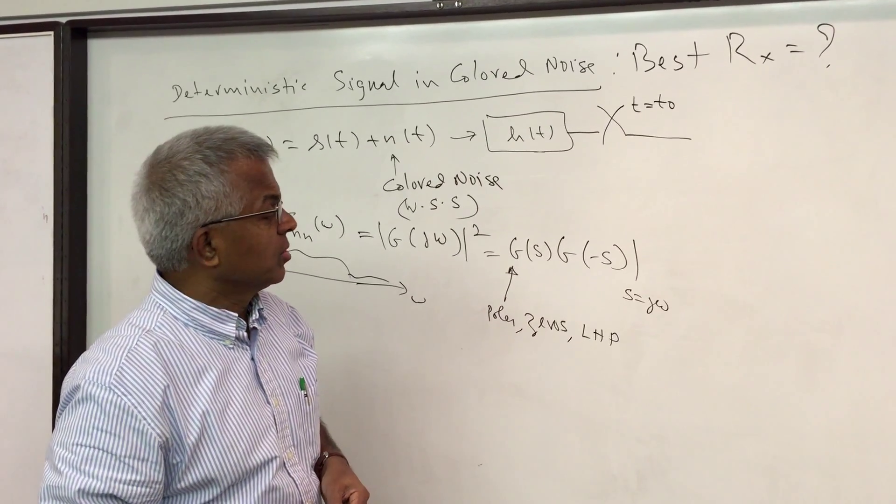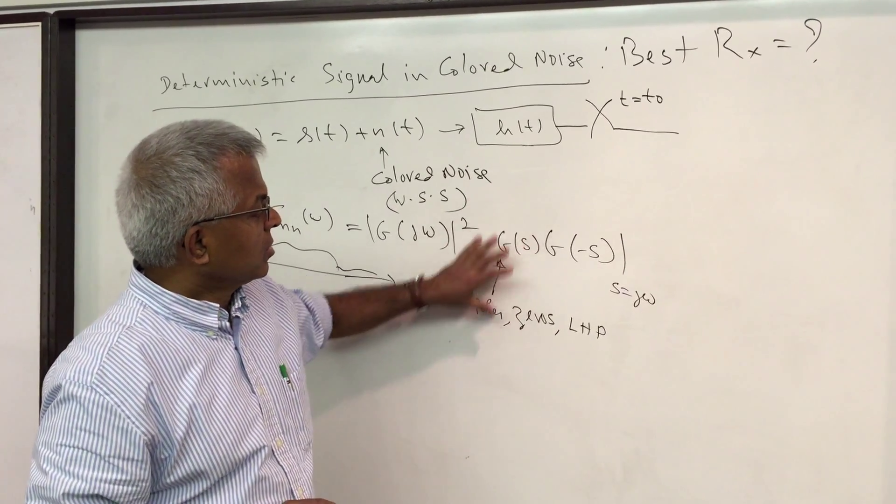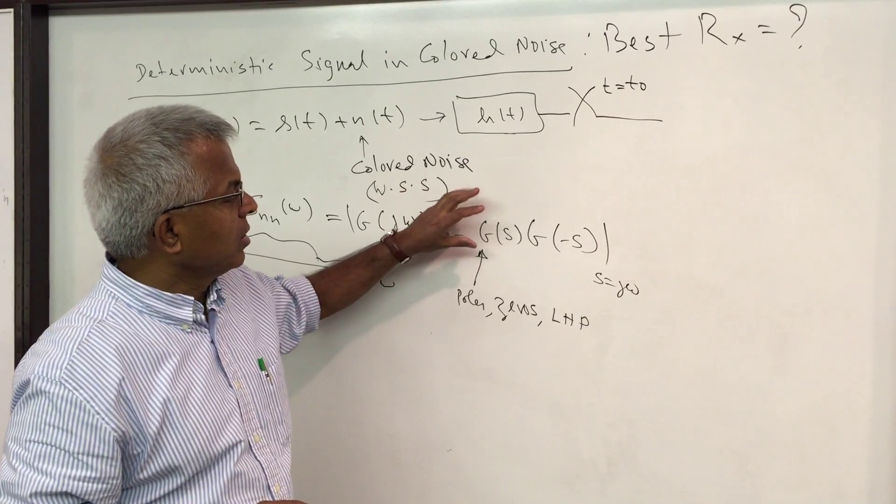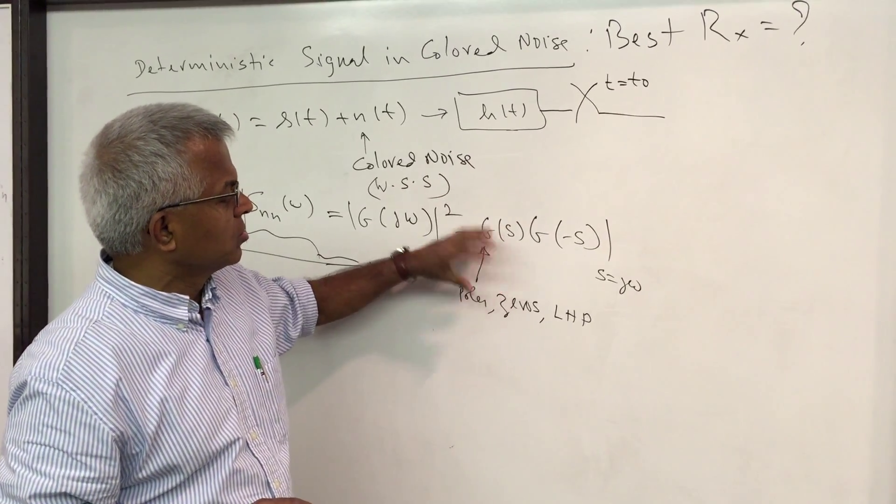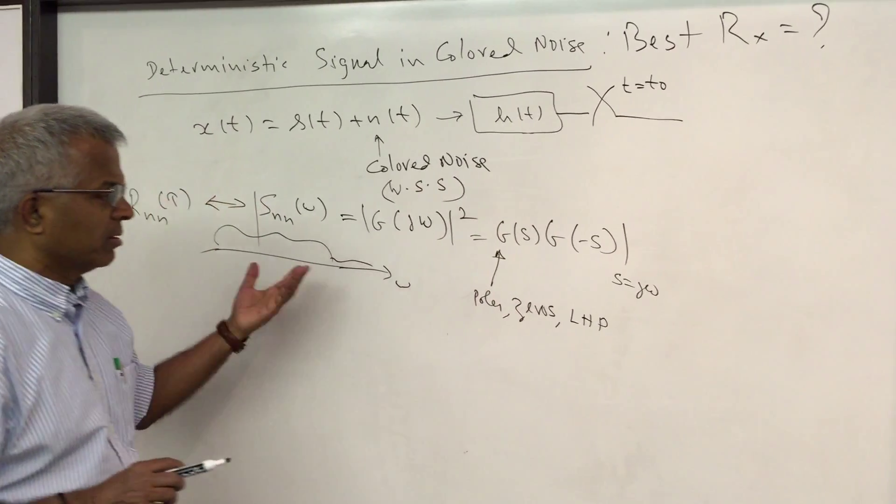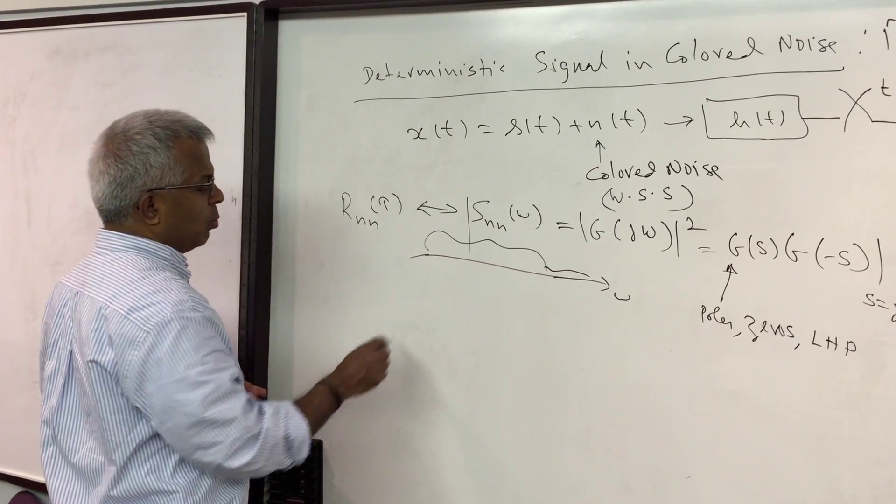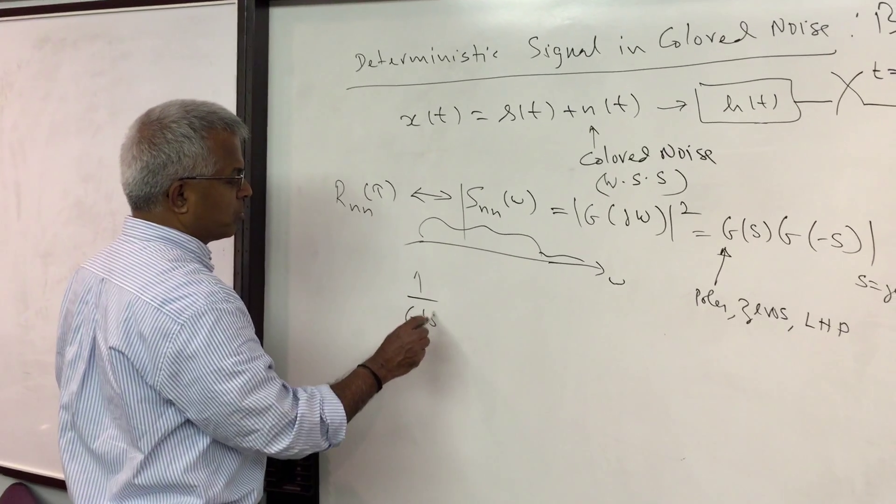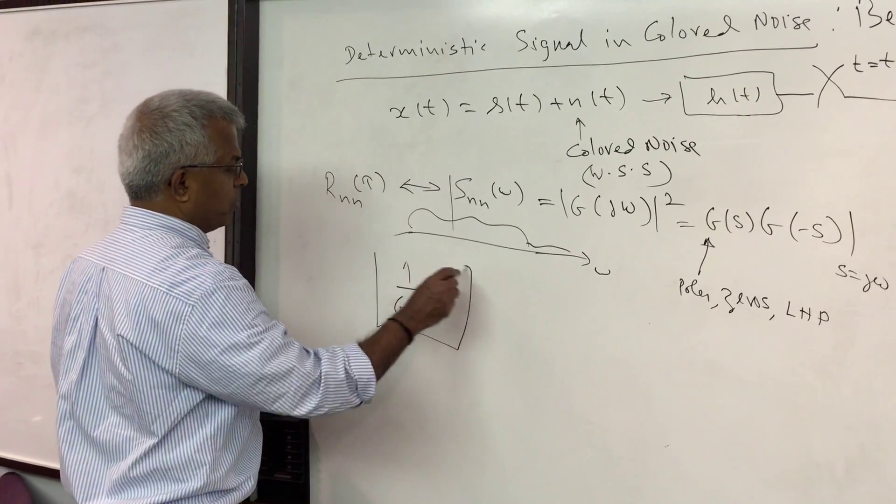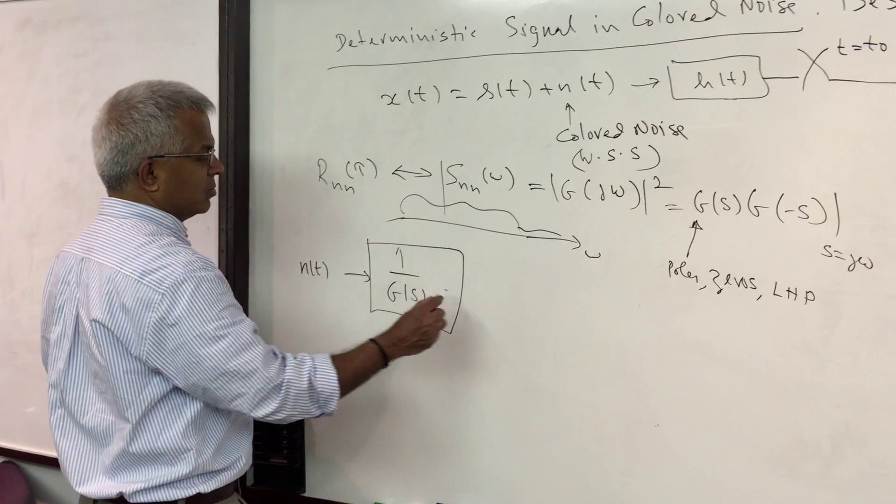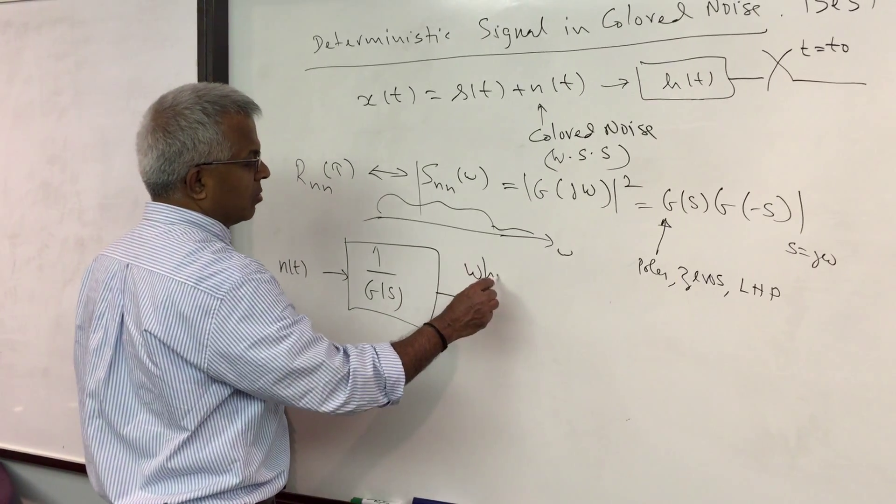Including the jω axis with even multiplicity, so you can reorder so that all the poles and zeros on the left half plane you associate it with G(s). Then 1 over G(s) has this property that if you pass the noise n(t) through this you will get white noise.